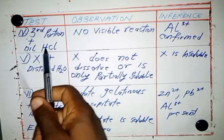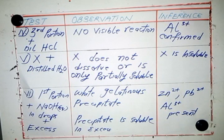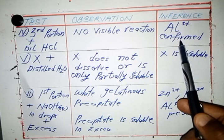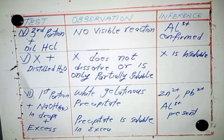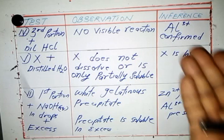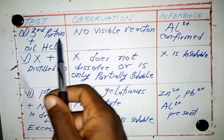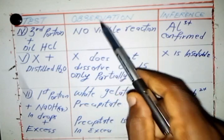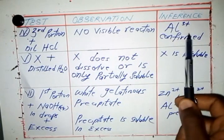Third portion plus dilute HCl. The observation is no visible reaction, and the inference is that aluminium is confirmed. This eliminates lead, because when lead reacts with dilute HCl, it forms a white precipitate — lead chloride is insoluble, unlike aluminium chloride which is soluble. Since no precipitate is formed here, aluminium is confirmed.